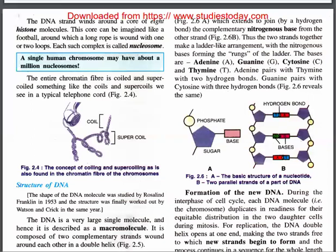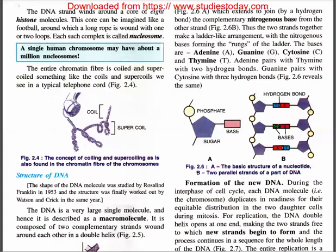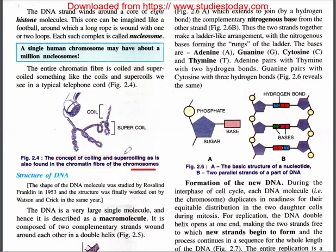The concept of coiling and supercoiling is also found in the chromatin fibers of the chromosomes. They've given an analogy — like a telephone cord — where coiling takes place, and this is applied to the chromatin fibers of the chromosomes.